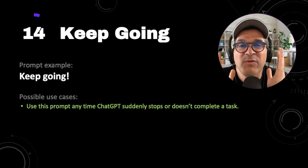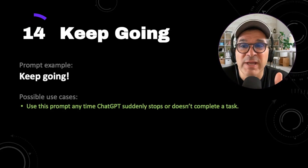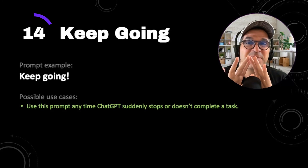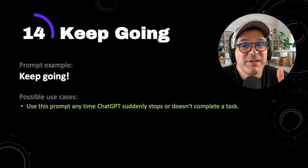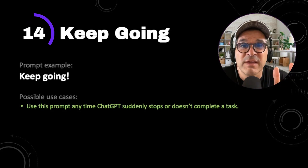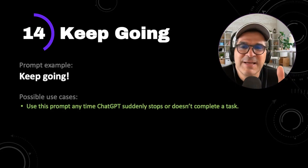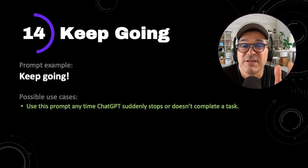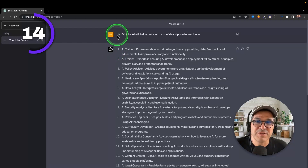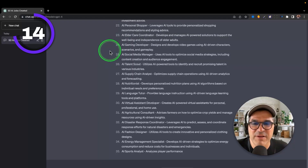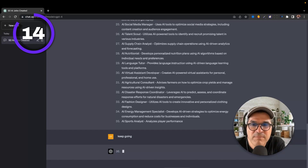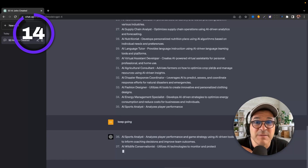ChatGPT power prompt number 14 is keep going. This is absolutely my favorite ChatGPT prompt — because it's so simple, and you're going to use it more often than you think. You use this prompt anytime ChatGPT suddenly stops or doesn't complete a task. For example, I asked ChatGPT to create a list of 50 jobs AI will help create — it stopped at 35. All I did was type in two magical words, and voila — ChatGPT keeps going.